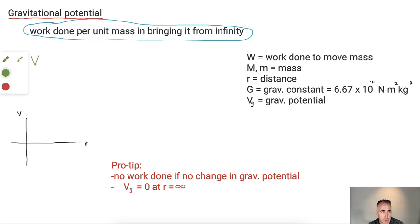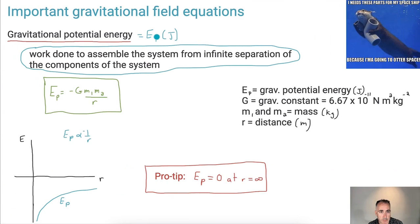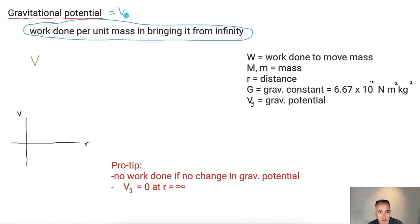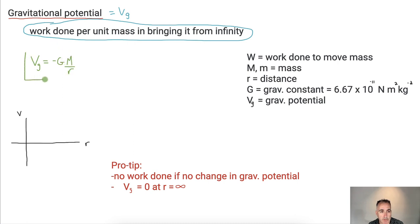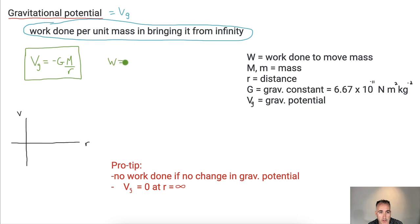Gravitational potential is called V-G, measured in joules per kilogram. The equation is V-G equals minus G times M over R. Because gravitational potential is also about work, we have an equation: work done equals M times delta V-G. Rearranging, delta V-G is just W over M — work done per unit mass — which is where the definition comes from.